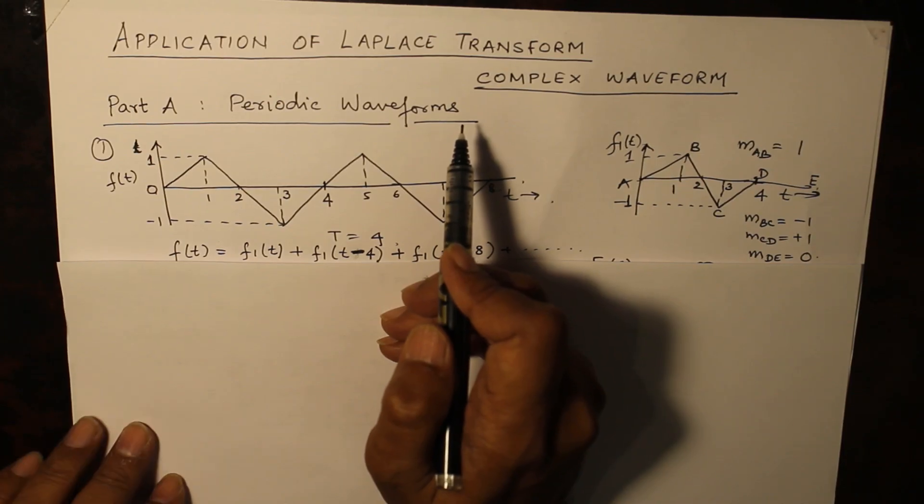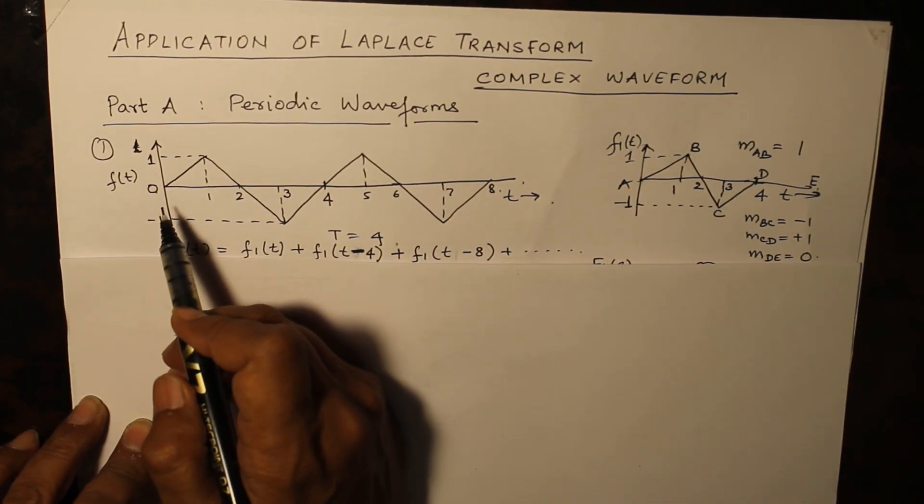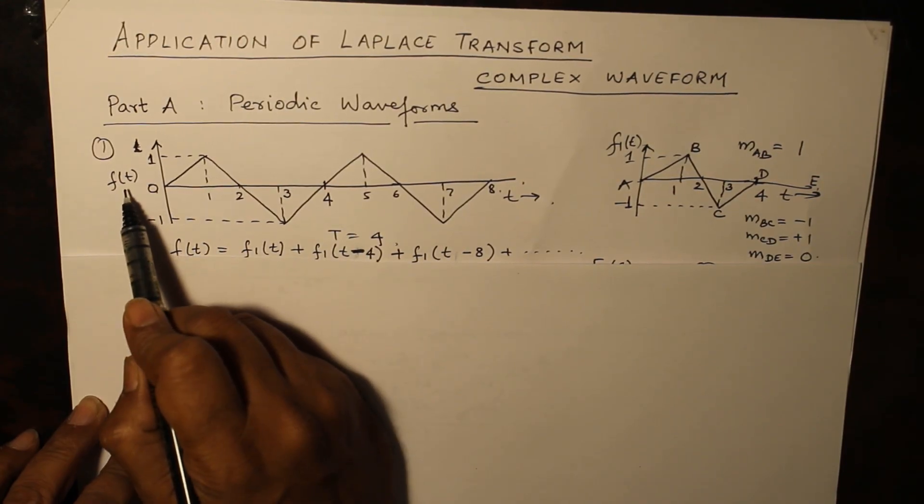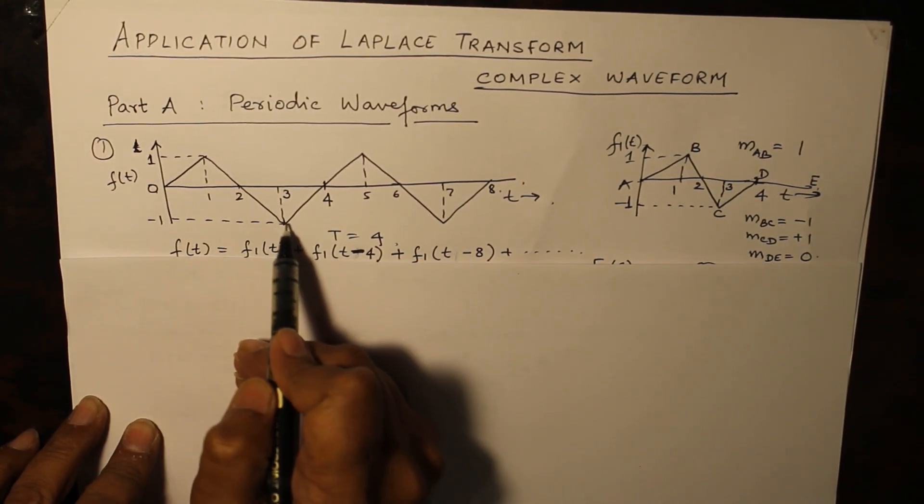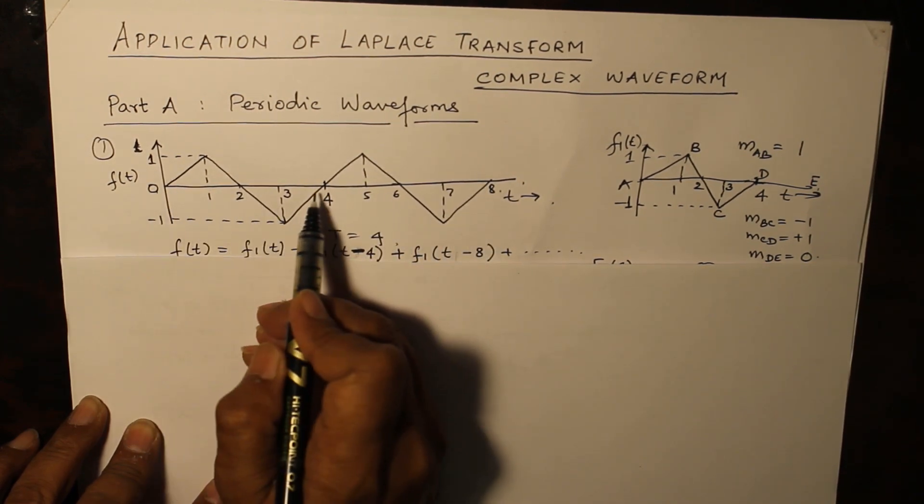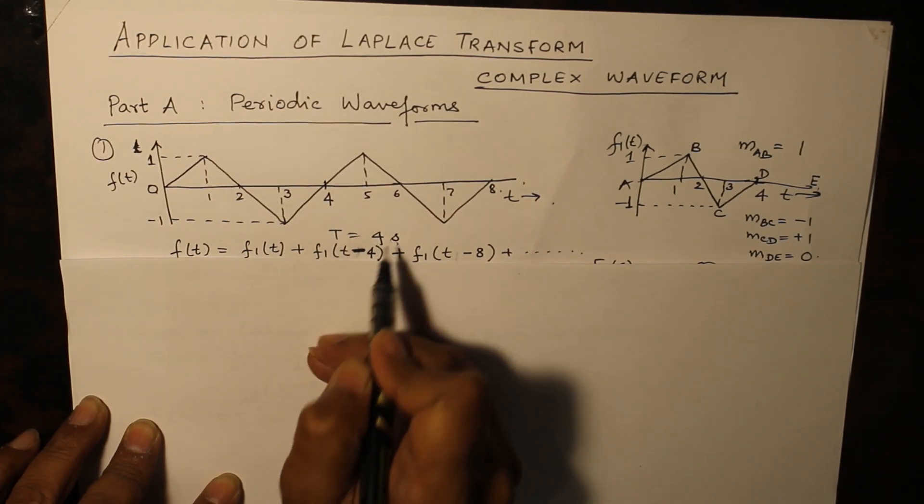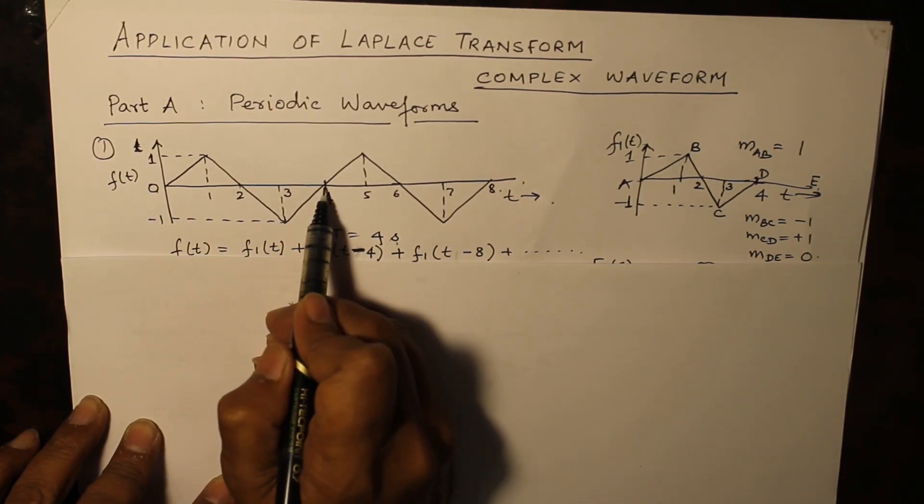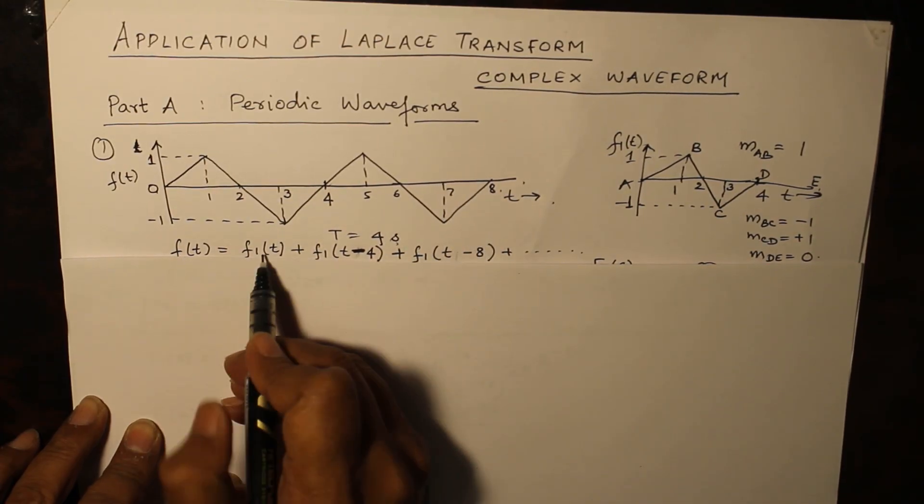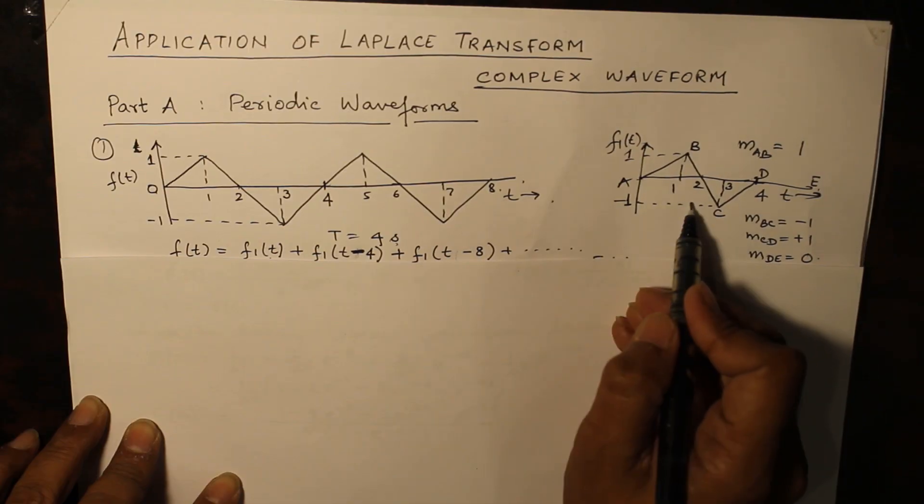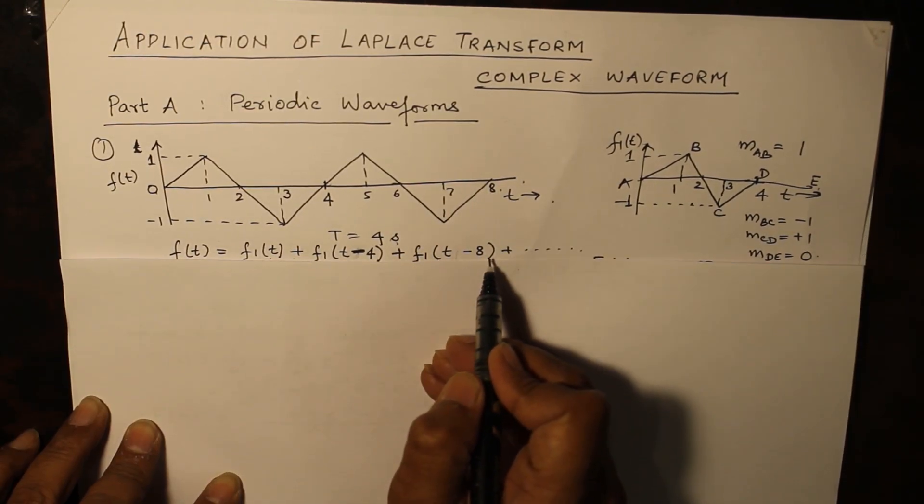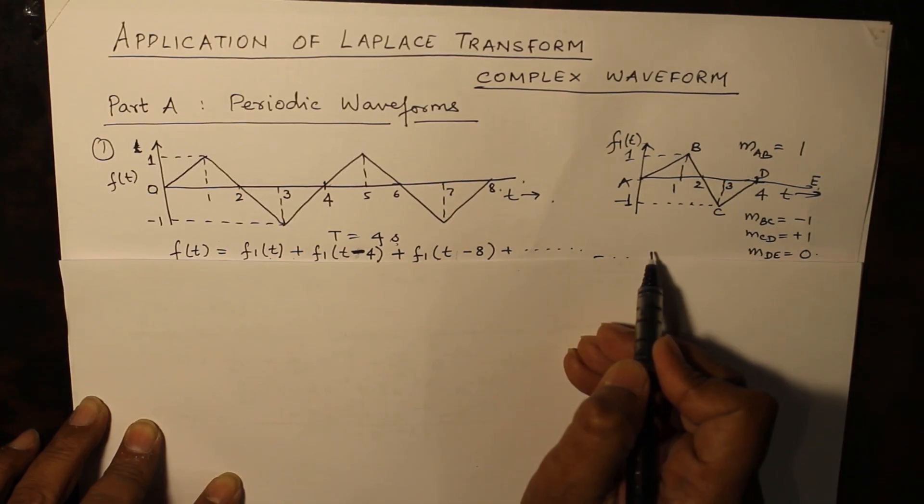Let us take a simple example, a very important example which has appeared in exams earlier. There is a function f(t) which is a triangular waveform. For simplicity, I have taken time T equal to 4 seconds. After T equals 4, the waveform repeats itself. As a result, f(t) can be expressed as some waveform f1(t) which is shown here and its repetition after intervals of 4 up to infinity.